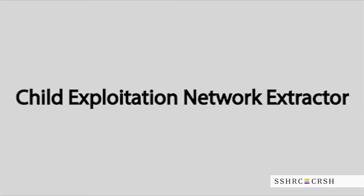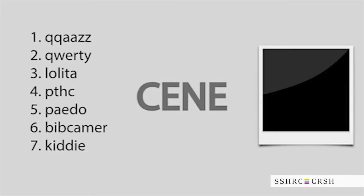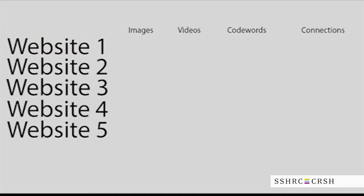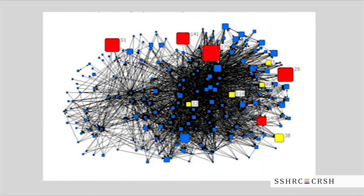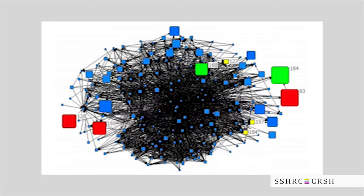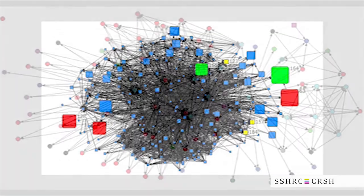The Child Exploitation Network Extractor, or SCENE, is programmed to recognize child exploitation content in the form of images, videos, and code words. SCENE then consolidates the collected information and creates a network of websites involved in the dissemination of child exploitation content.